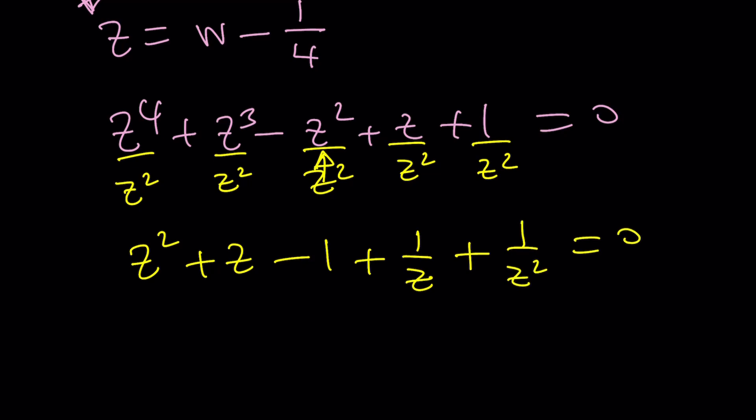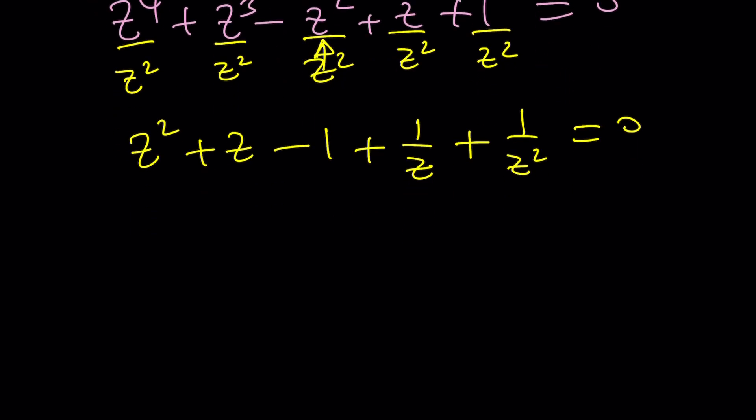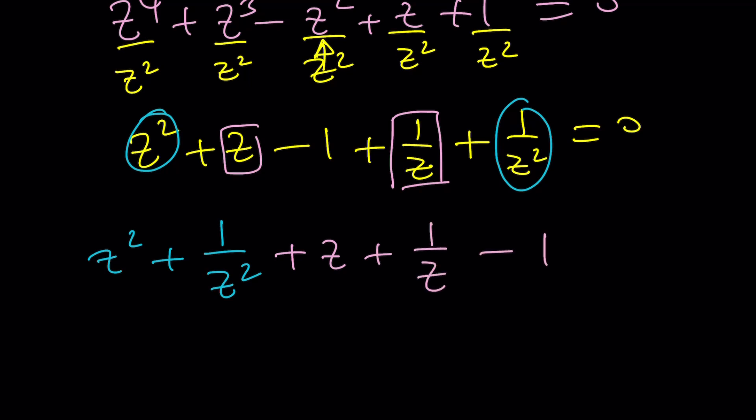This may not look nice to you at first glance but let me tell you. This is actually really cool because you can bring these two together. Write it as z squared plus 1 over z squared. Isn't that nice? And then you could also bring these two together. Right? And that'll give you z plus 1 over z. And minus 1 is going to be left alone. I mean on the left hand side. Okay. Great.